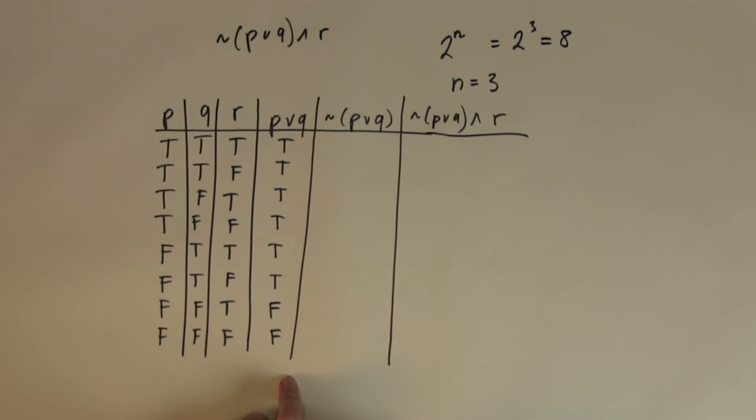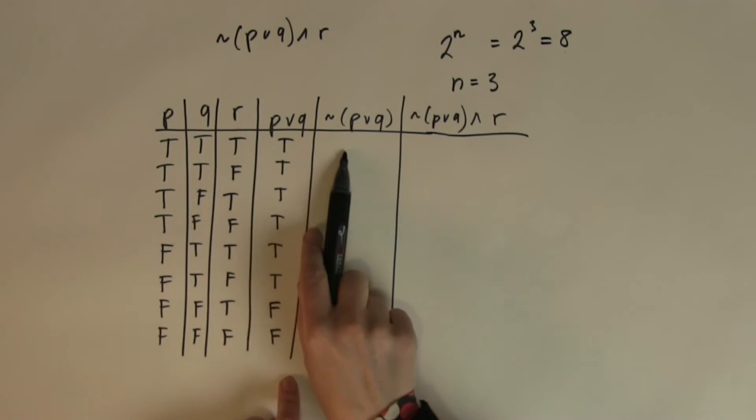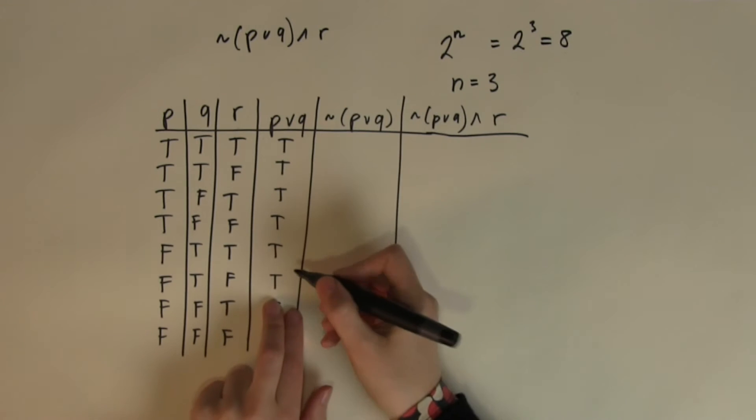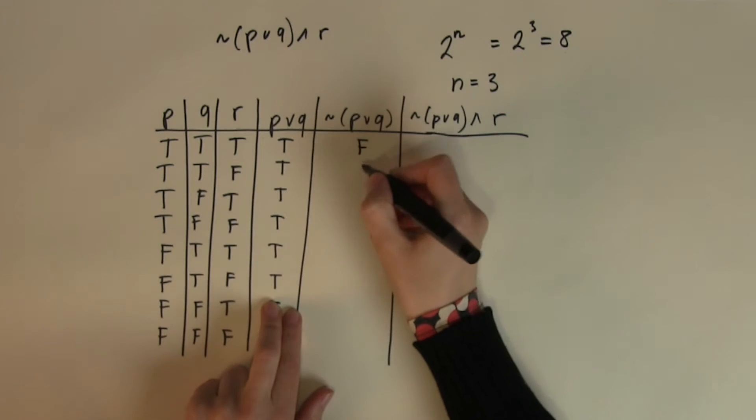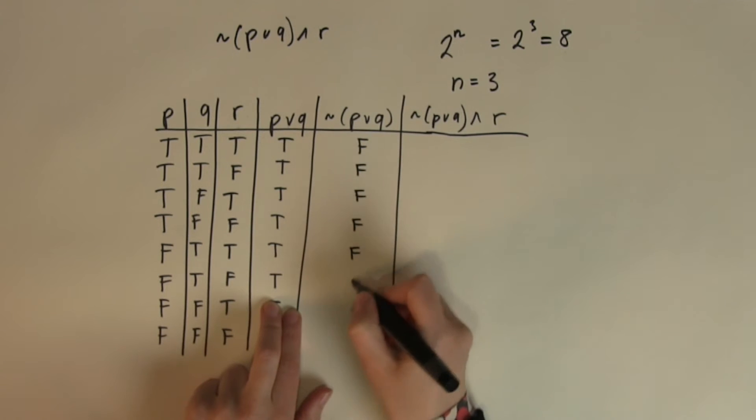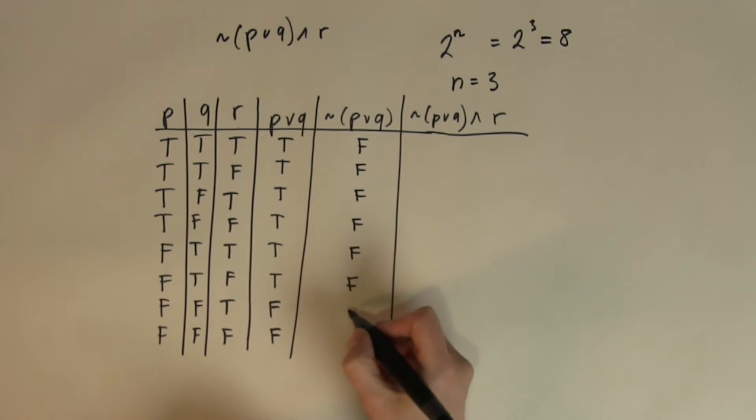What does the NOT do? Change true to false and change false to true. So, the top half up to here is true, so every one of them will be false. And the bottom two are falses which then will turn into trues.